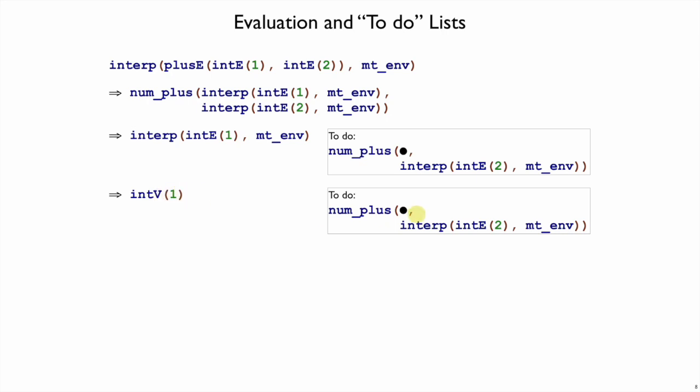So once we get that nv1 back, we can drop it in place of the dot, which I'm showing here, and then continue on with the interp of 2, which I'm showing here. When we get a value back for this interp of 2, it goes right here. So that's why the dot has moved to the second part of numplus instead of the first part.